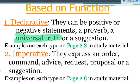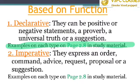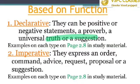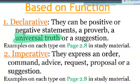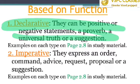Based on function, first is declarative. Declarative sentences can be positive or negative statements — a statement, a proverb, a universal truth, or a suggestion. Examples are on page 2.8 in your ICAI study material. For instance, 'It is 6 o'clock' is a declarative sentence. 'Please come in,' 'Monday comes before Tuesday' — a universal truth — and 'Please eat your food on time' — a suggestion — are all examples of declarative sentences.